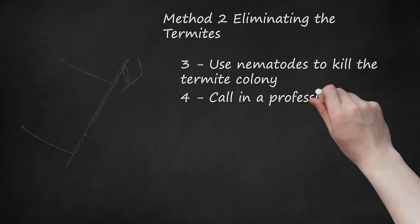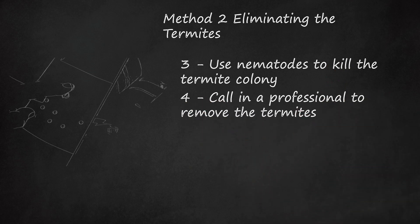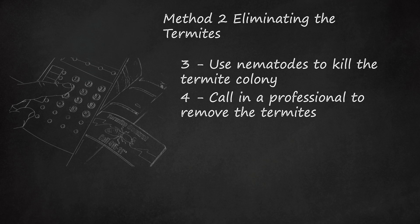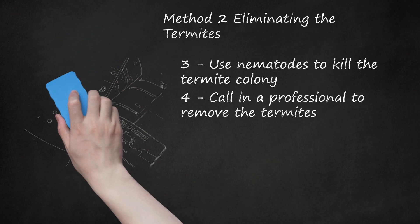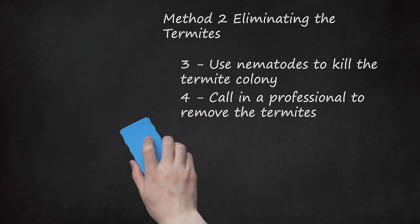Step 4: Call in a professional to remove the termites. While do-it-yourself methods may seem appealing, your best solution is to hire a professional to remove the termites. Look online for exterminators who specialize in removal of termites and their colonies. Make sure to read user reviews and choose an exterminator who has a good reputation. Calling in a professional may cost more money initially, but will save you money on repairing structural damage around your house. Talk about future prevention methods with the exterminator as well.